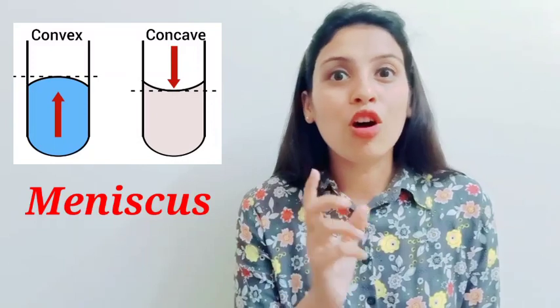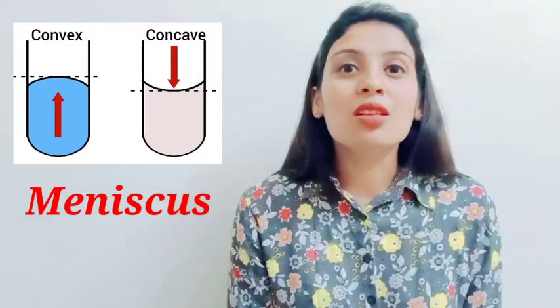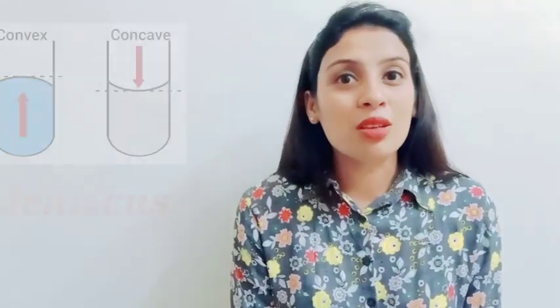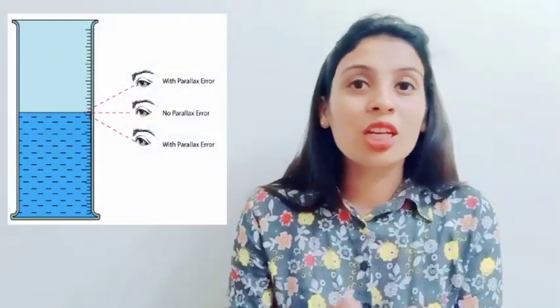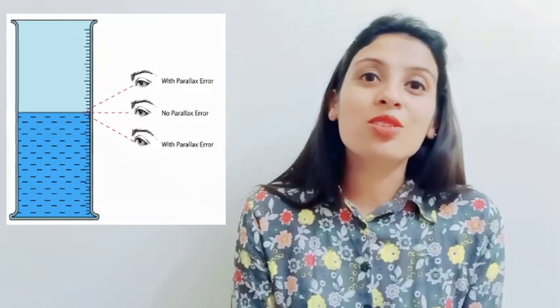After a liquid is poured into a container, a curve can be seen on the surface of that liquid. This curve may be convex or concave and is known as the meniscus. To measure an accurate reading, we should always note the bottom reading in case of a concave meniscus, and the top reading in case of a convex meniscus. If you do not do this, the error in your reading is known as parallax error.